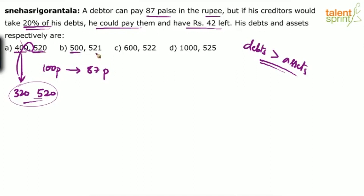Similarly, option B has debt 500 and assets 521 — debt is less than assets, so it's wrong. Option C and option D both look okay because in both cases the amount he has to repay is more than his assets. In option D, the amount to repay is 1000, which is more than assets of 525.